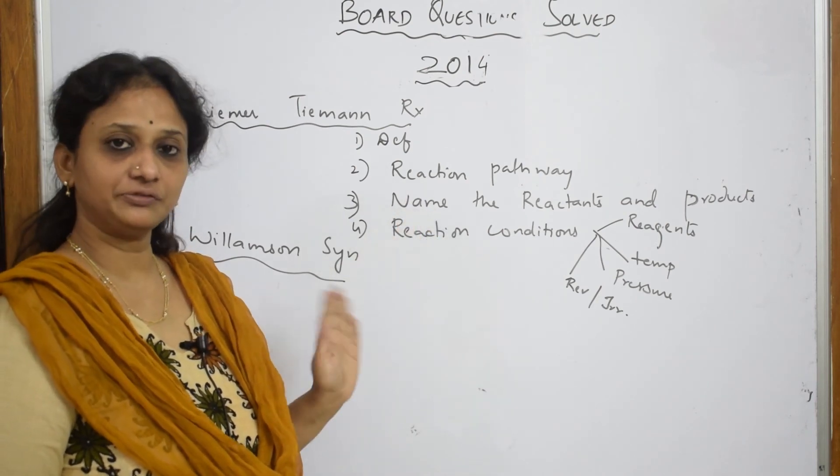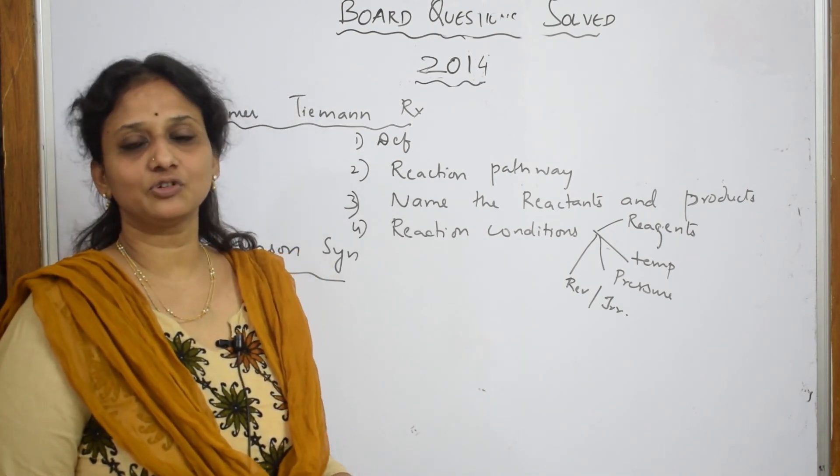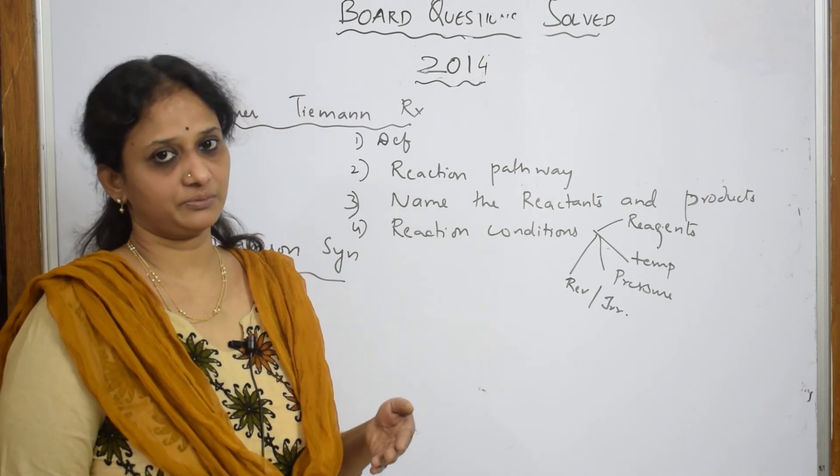Name of the reactants - phenol, you have to name. Intermediates, if you are not able to name, don't name. Because intermediates, it is very difficult for you all to remember the names. Reactant and your product formation.